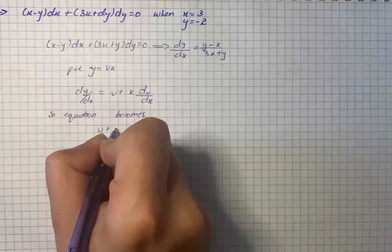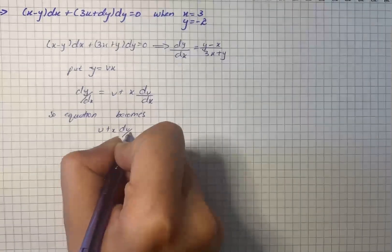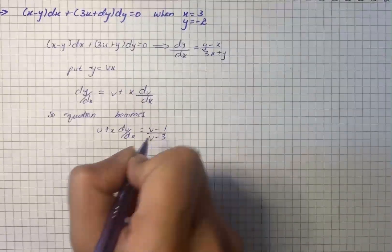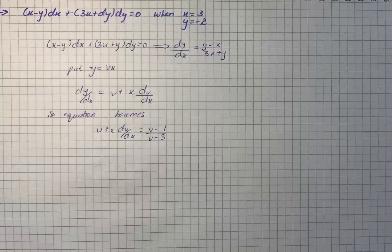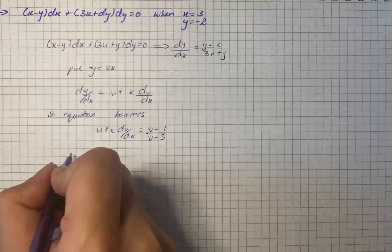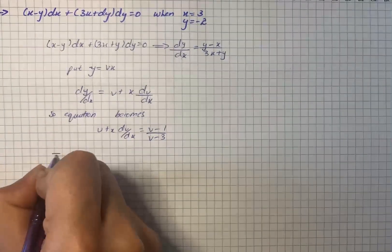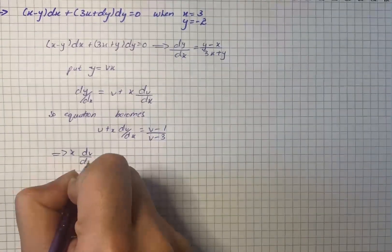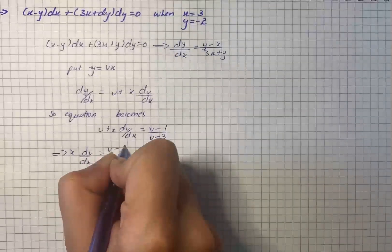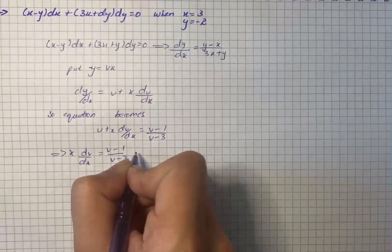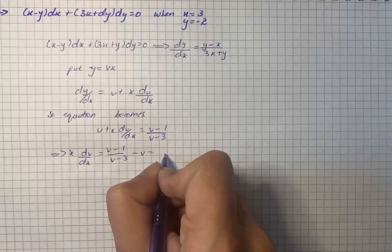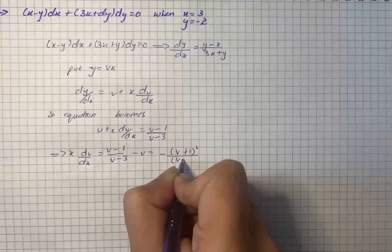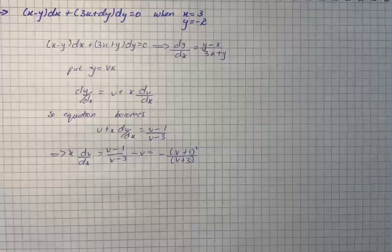The equation becomes v plus x times dv/dx equals (v minus 1) over (v minus 3). Now we start solving. We have x times dv/dx equals (v minus 1) over (v minus 3) minus v, which simplifies to (minus v squared plus 1) over (v plus 3).